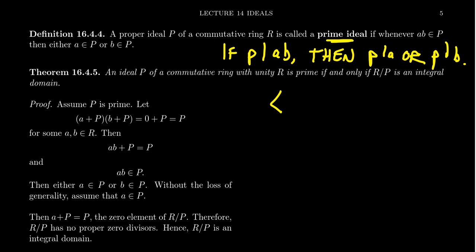So imagine we have a principal ideal generated by some element P. And imagine that AB is inside of that. Well, if AB is inside of that, that means there exists some element R inside the ring, such that PR is equal to AB. So that then gives us that P divides the product AB.